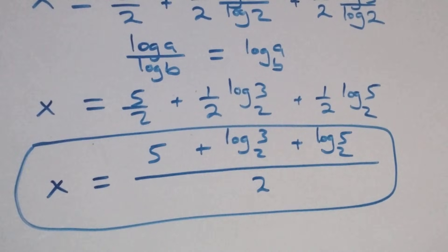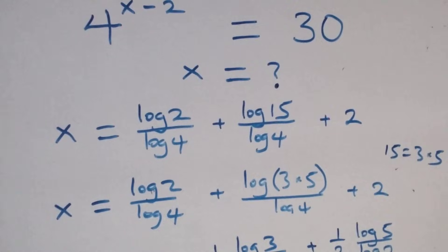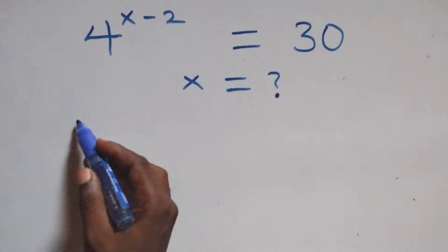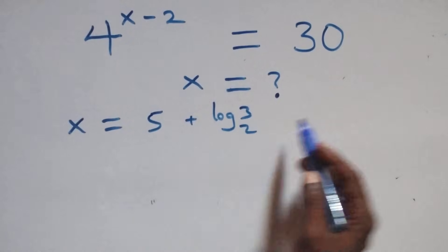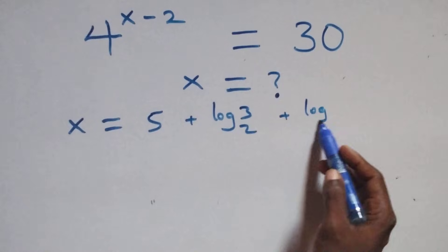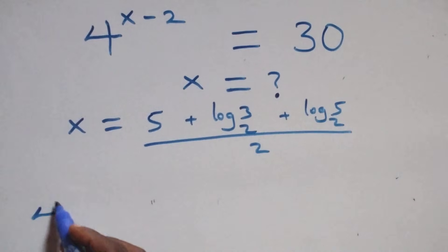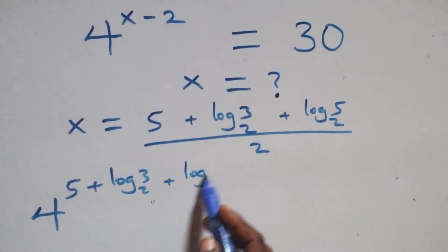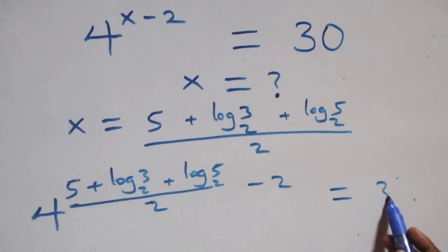Now let's verify the value of x. We substitute x equals 5 plus log 3 base 2 plus log 5 base 2, all over 2, back into the original equation. We need: 4 raised to power (5 plus log 3 base 2 plus log 5 base 2, all over 2) minus 2, equals 30.